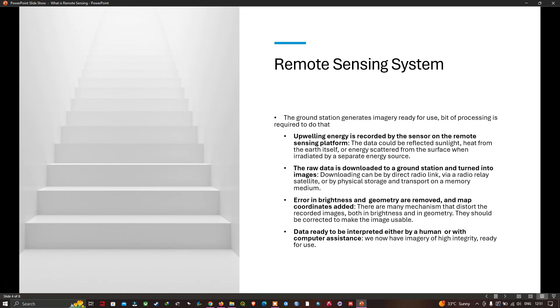The second block is the downlinking of the signals which carries the information recorded by the detectors, followed by a subsequent translation of the electrical signal into imagery. This normally occurs in a suitable facility on the ground. The raw data is downloaded to the ground station and turned into images. The downloading can be by direct radio link or via a radio relay satellite or by physical storage and transport on a memory medium.